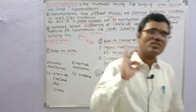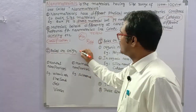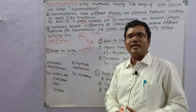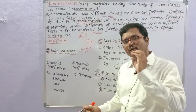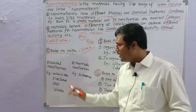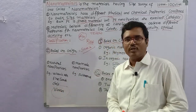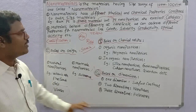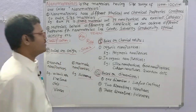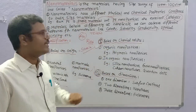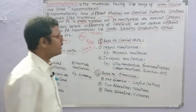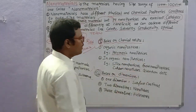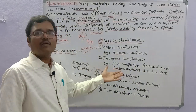Nanomaterials are classified based on three factors. Factor number one is based on origin or source: nanomaterials are divided into natural nanoparticles and man-made nanoparticles. Natural nanoparticles occur in nature — examples include volcanic ash, sand, dust, and viruses. Man-made nanoparticles include carbon nanoparticles, carbon nanotubes, and quantum dots, as well as inorganic nanoparticles.